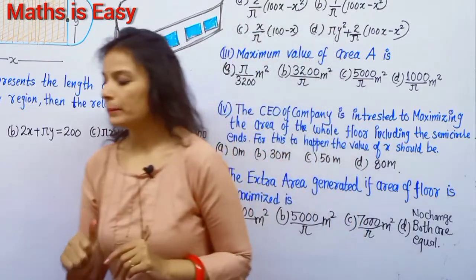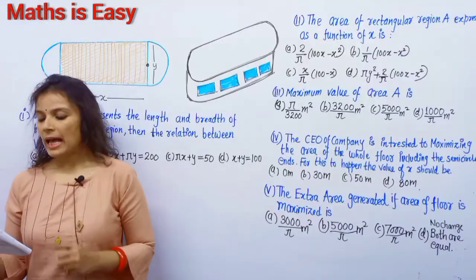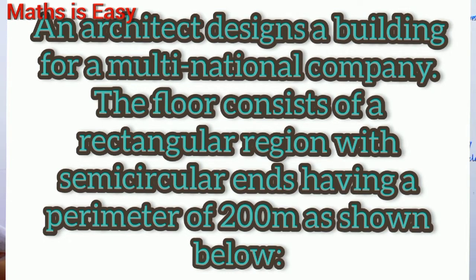Here I have my first question. An architect designed a building for a multinational company. The floor consists of a rectangular region with semicircular ends, having a perimeter of 200 meters, as shown in the figure. Based on the above information, answer the following.